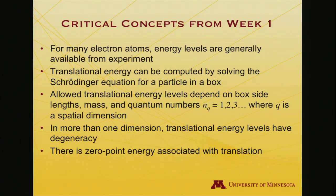So if there's only one dimension, there'd only be one quantum number. If there's two dimensions, there'd be two quantum numbers. Every set of quantum numbers ranges over 1, 2, 3 — they're integers. It also depends on the side length of the box. If there is one dimension to the problem, translational levels have no degeneracy, but they can be degenerate in more than one dimension.